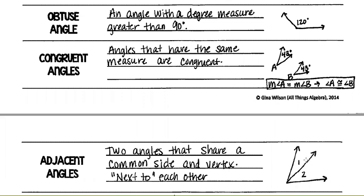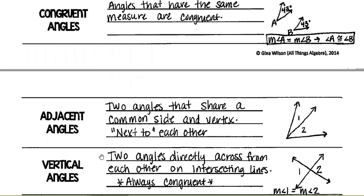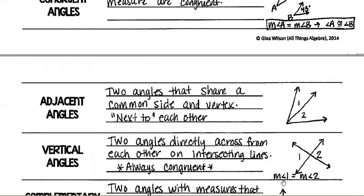Adjacent angles: two angles that share a common side and a vertex — they are next to each other. Angle one and angle two are adjacent angles. Vertical angles are two angles directly across from each other on intersecting lines — they are always congruent. So the measure of angle one equals the measure of angle two.